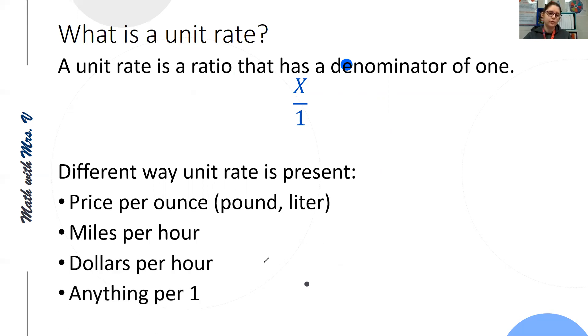The big thing about unit rate though is we generally are working in two different types of units. Price per ounce, that's money and weight. Miles per hour, that's distance and time. Dollars per hour, that's money and time. So we generally have two different types of units.